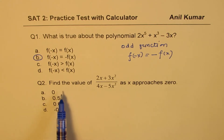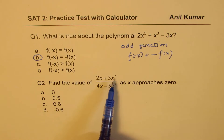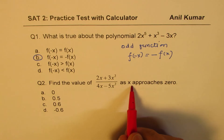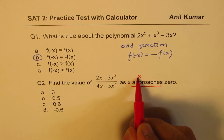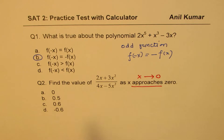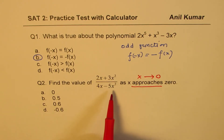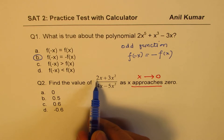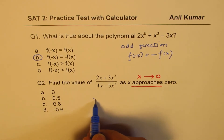The next question is: find the value of (2x plus 3x squared) divided by (4x minus 5x squared) as x approaches 0. The key here is that x is approaching 0, not equal to 0. So substituting 0 directly gives 0 over 0, which is not valid. What we do is factor out x from both numerator and denominator.